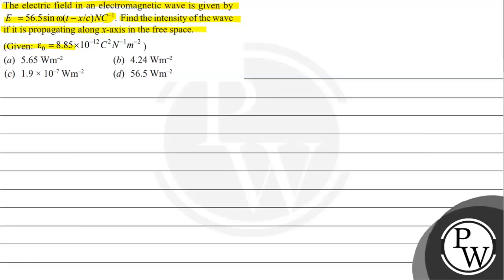We have been given the permittivity of free space as ε₀ equals 8.85 × 10⁻¹² coulomb square per newton per meter square. Option A gives 5.65 watt per meter square. Option B gives 4.24 watt per meter square. Option C: 1.9 × 10⁻⁷ watt per meter square. Option D: 56.5 watt per meter square.